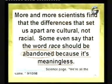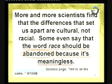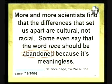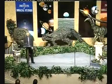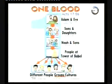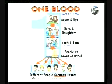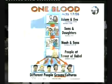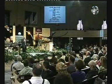On the ABC News science page, regarding research on humans, they said: 'More and more scientists find the differences that set us apart are cultural, not racial. Some even say the word race should be abandoned because it's meaningless.' Why hasn't the church been out there saying this and leading the way? That's why I love the term in Acts chapter 17 — 'God made of one blood.' We're all related, we all go back to Adam and Eve. We need to stop looking at minor external features and see who the real person is.